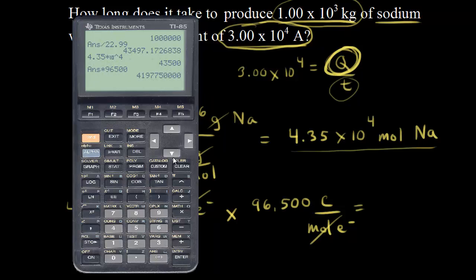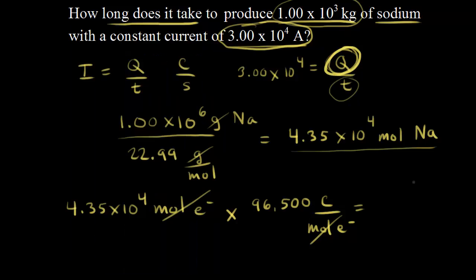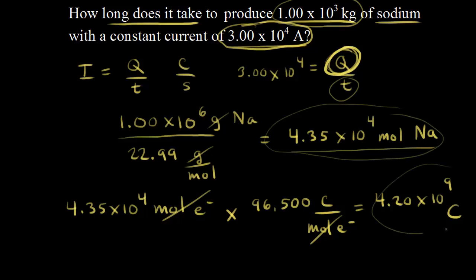Calculating: 4.35 × 10⁴ times 96,500 gives us 4.20 × 10⁹ coulombs. That's the total charge we need to make this many moles of sodium. Now we can plug that back into our current equation and solve for time.